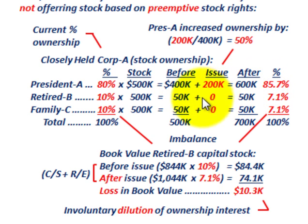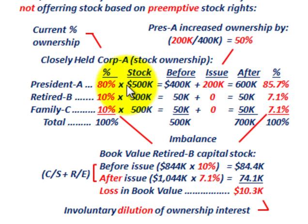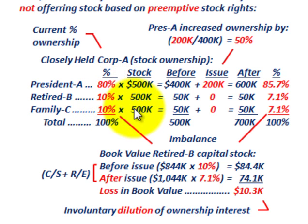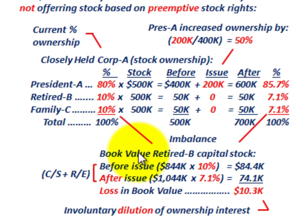With preemptive rights, both retired stockholder B and family member C wanted to be able to buy in to keep their interest proportionate — to keep everything on an even keel. If they were able to buy in, they would have ended up with the same percentage ownership after as they had before. Here's the imbalance, and we can look at how retired B claims he was injured in terms of the book value of the capital stock.